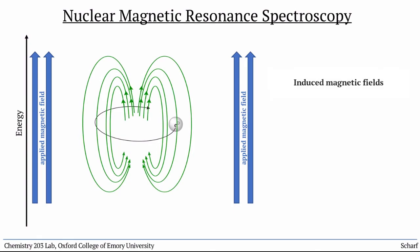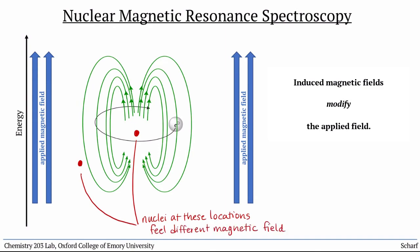These induced magnetic fields act as little modifiers to the big magnetic field that we've applied. So depending on the particular electronic environment around a specific nucleus, it may experience a slightly larger or slightly smaller magnetic field than average, and therefore will absorb a slightly higher or lower frequency of photon.